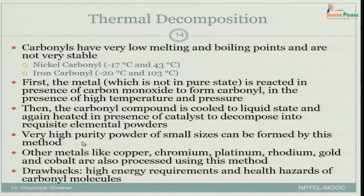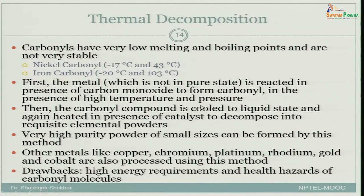Like electrolysis, purification is also achieved here. Very high purity powder of small sizes can be formed. Other metals like copper, chromium, platinum, rhodium, gold, and cobalt are also processed using this method. However, it is very energy intensive — requiring high temperature and high pressure to form the carbonyl, then cooling, then re-heating with a catalyst. Despite this drawback, the advantages are high purity and very small powder size.